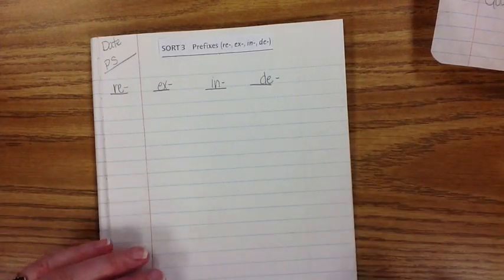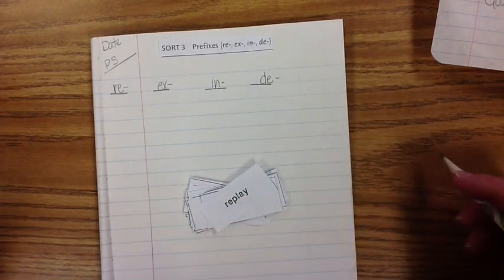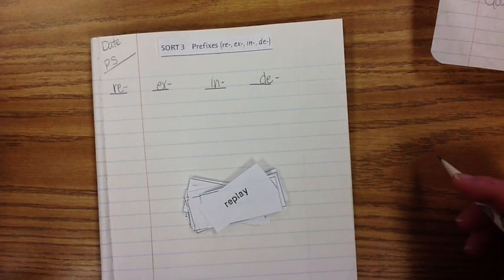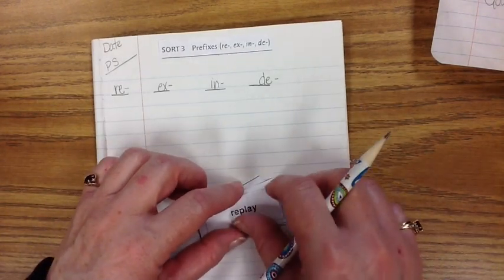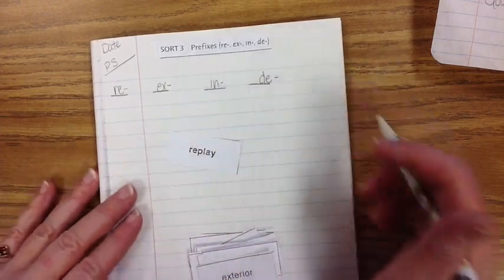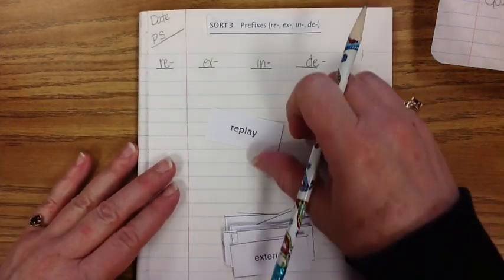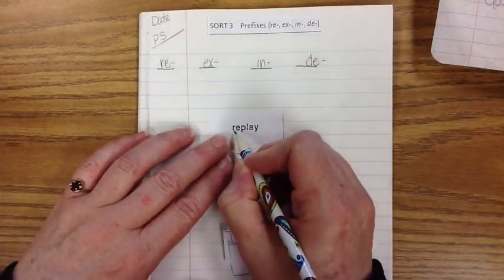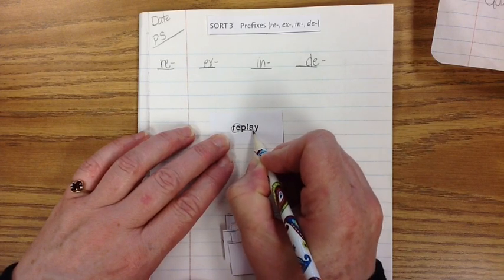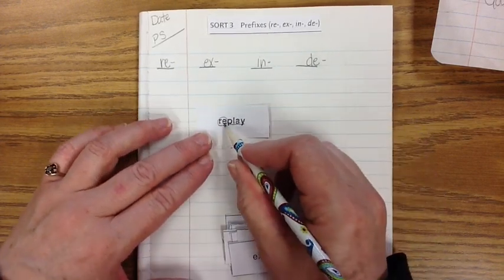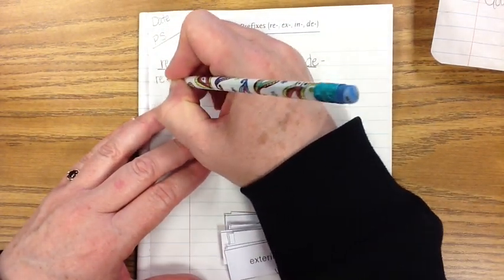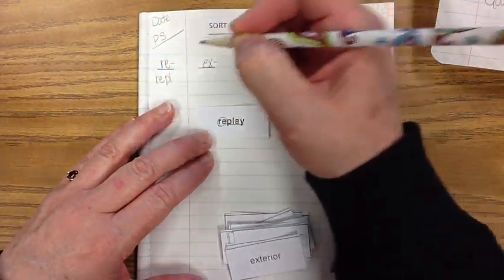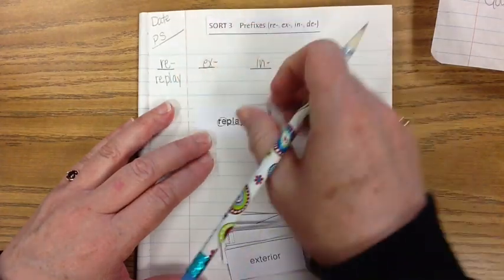Many of these words that we are working with do not have a base word. That means they don't stand alone. But this first one we're going to look at does. The word is replay. Here's your prefix. Here's your base word. R-e-p-l-a-y, replay.